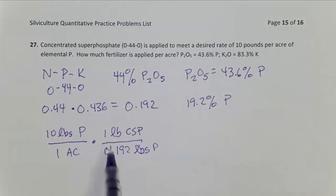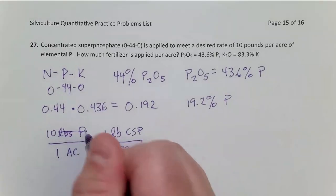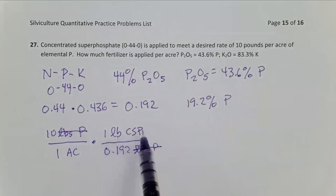And so if I look at this, I'm dividing by a number less than 1. I'm dividing by a fraction, which is going to mean that number is going to get bigger, right? So I know I'm doing this in the right direction. Let's look at what happens with units. Pounds phosphorus cancels, which means I'm going to be left with pounds of concentrated superphosphate, my fertilizer that I want per acre. That's exactly what this problem asked for.